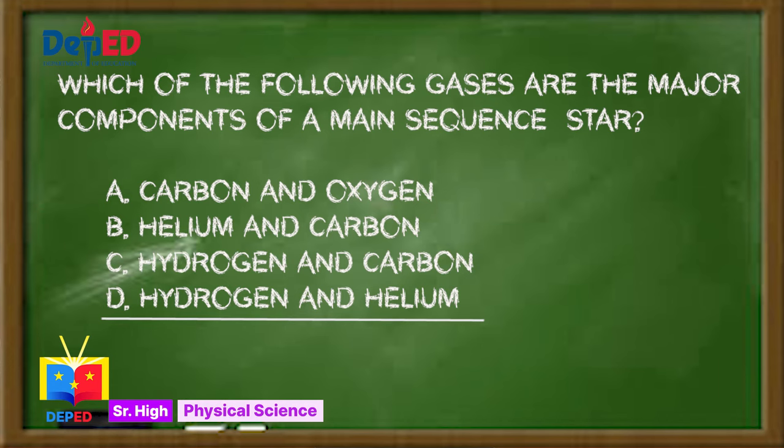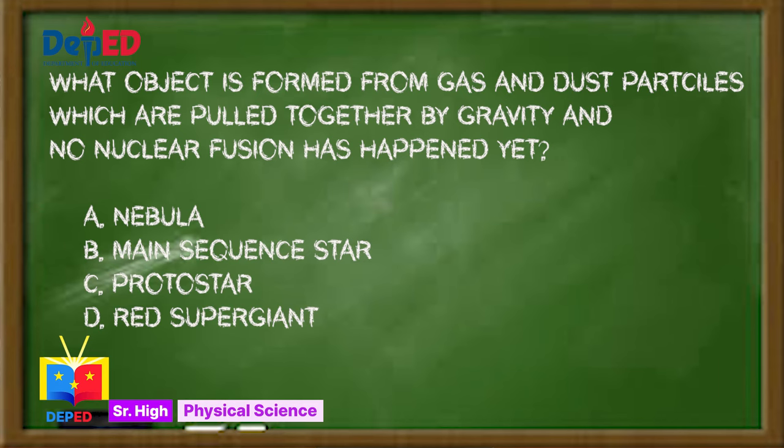Question number three: What object is formed from gas and dust particles which are pulled together by gravity and no nuclear fusion has happened yet? A. Nebula, B. Main sequence star, C. Red giant, or D. Red supergiant. The correct answer is A. Nebula.